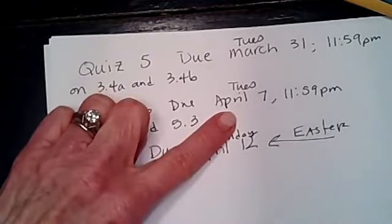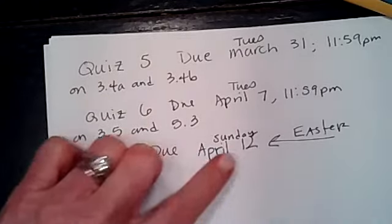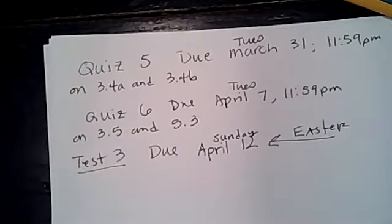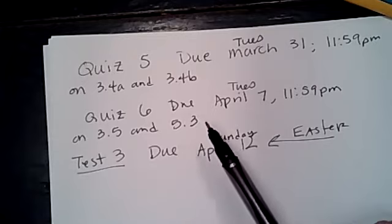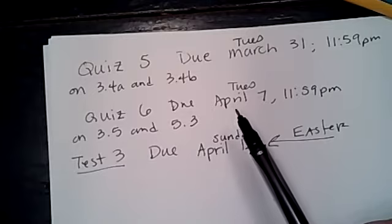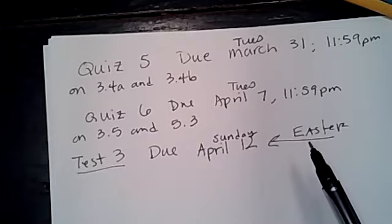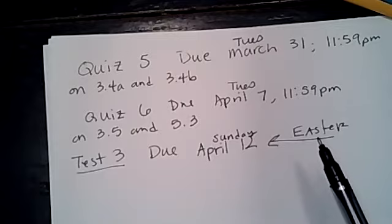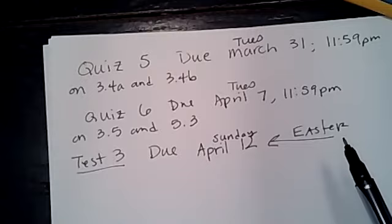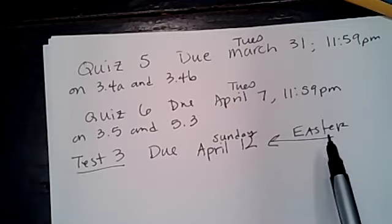Quiz 6 is due Tuesday April 7th, and that's on 3.5 and 5.3. Test 3 is due Sunday April 12th, which is Easter Sunday. Normally the test would be due on Friday, so that gives you extra days. You could have Test 3 done this week. If you choose to wait until Easter Sunday, I do not want an email about missing time with family — that's because you waited to the last minute. Ron Shapiro, who passed away this year and owned the Hawks, had a saying: bad planning on your part does not necessarily constitute an emergency on mine. Plan ahead. I will be with my family on Easter and won't be checking email.